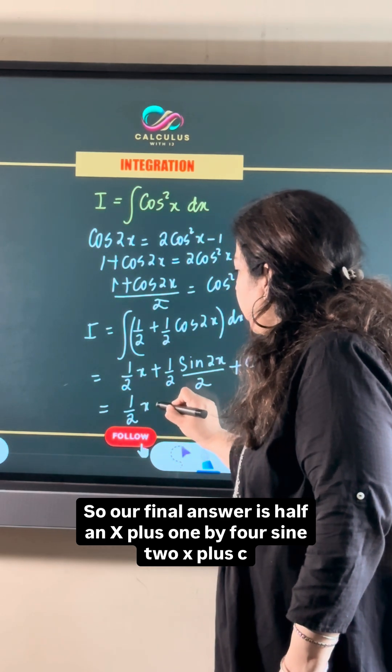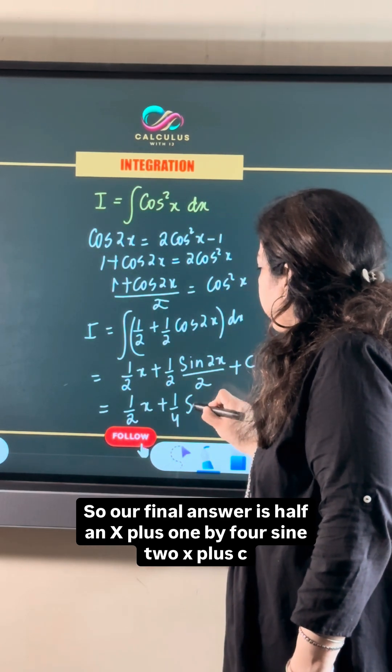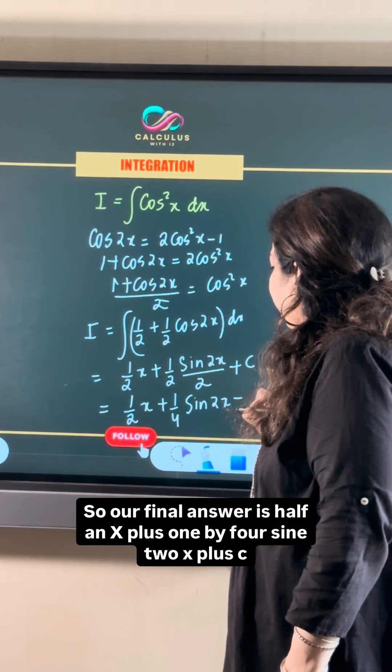So our final answer is half x plus 1 by 4 sine 2x plus c.